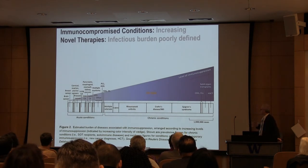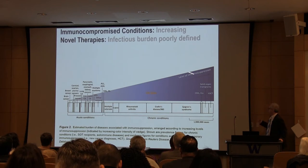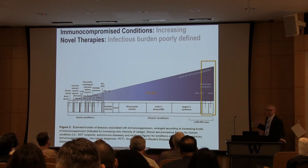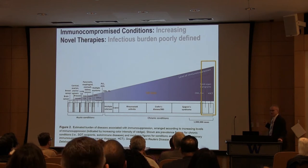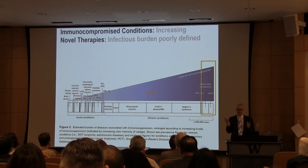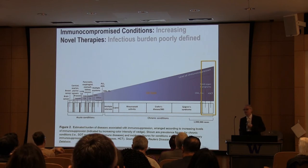I'm going to focus on the immunocompromised population and especially the stem cell transplant population. This figure visualizes the spectrum of immunosuppression in our population, and as you can see, the stem cell and solid organ transplant populations are at the very end of the spectrum. These are extremely immunosuppressed conditions, but there are also important variations that make the matter more complicated.